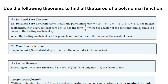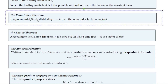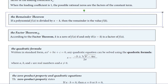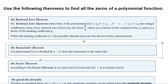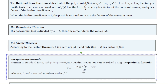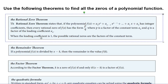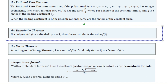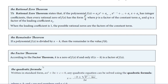Hey there, it's Professor McDonald. In this video we're going to use the following theorems to find all the zeros of a polynomial function. These theorems are ones that hopefully you've already seen and learned about. I have them listed here for quick reference, from the open source free textbook OpenStax College Algebra. We're going to use the rational zero theorem, the remainder theorem, the factor theorem, the quadratic formula, and the zero product property.